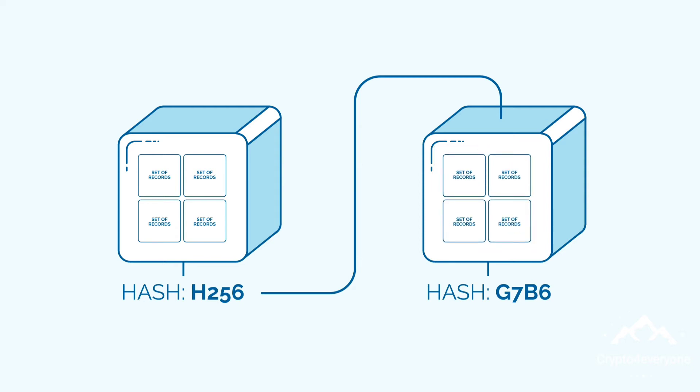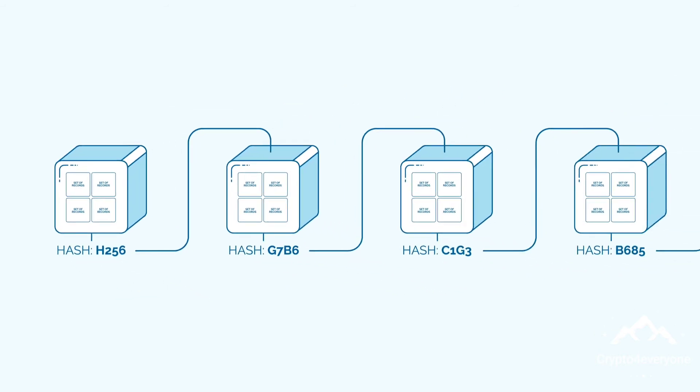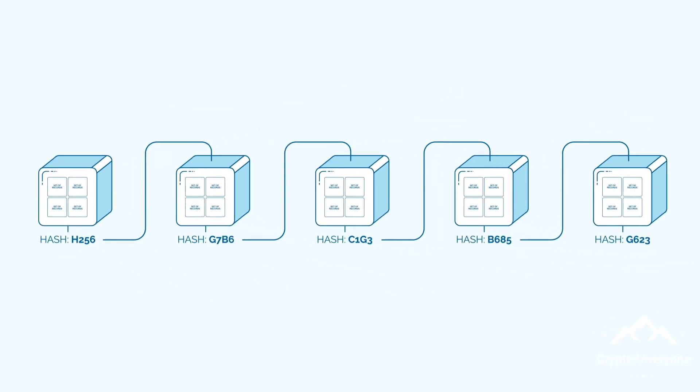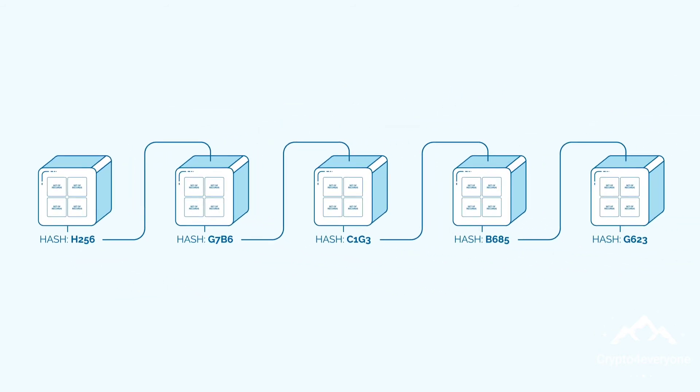When this rule is followed for every block within a blockchain, you can see how all of the blocks are not only linked to their preceding blocks, but also to each and every other block that came before them, forming a truly linked chain of blocks — or a blockchain.